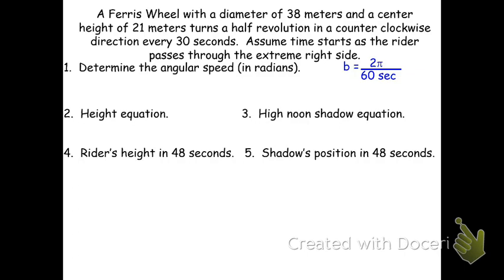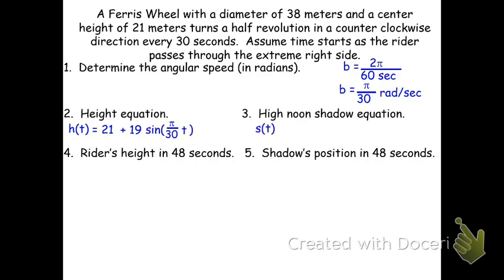The angular speed: b = 2π/60 = π/30 radians per second. For the height, h(t) = 21 + 19·sin(π/30 · t). The shadow's position is s(t) = 19·cos(π/30 · t).